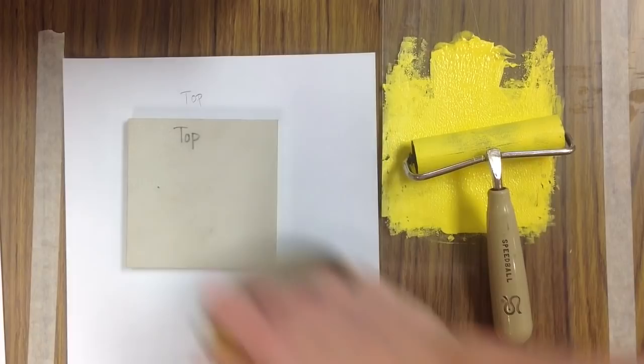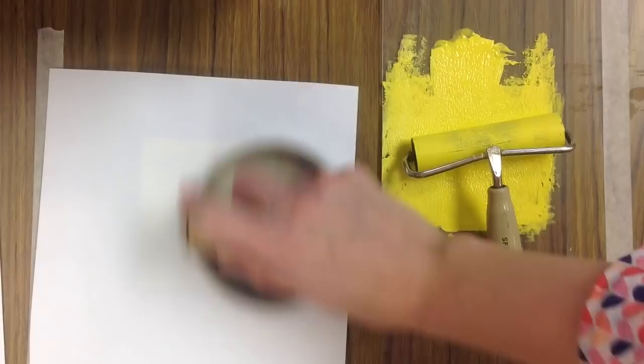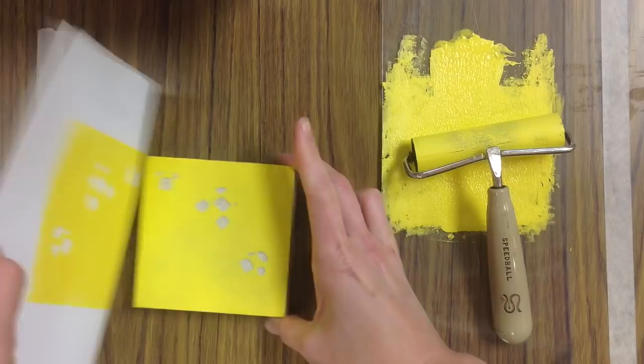I like to flip it over and use my barren and really give it a good rubbing so that my print is going to be nice and consistent. And there's my yellow print.